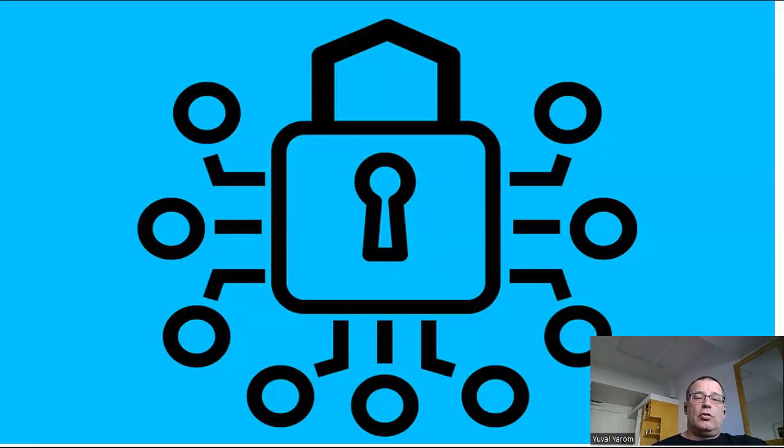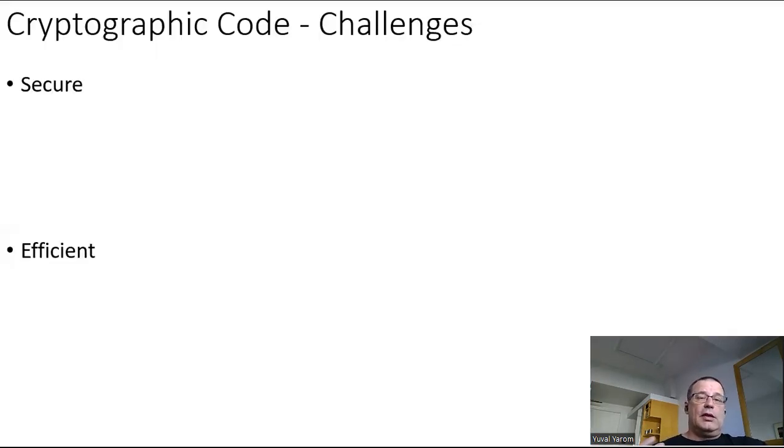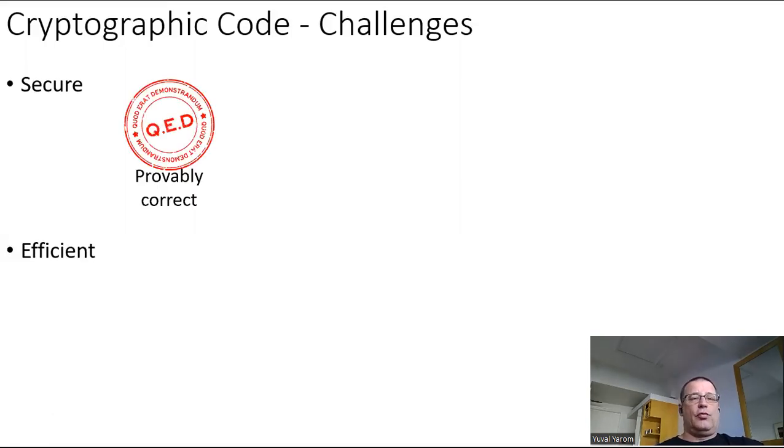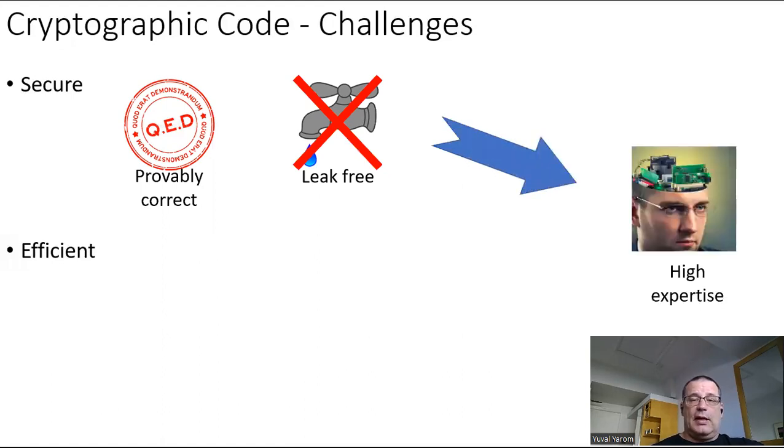Now cryptographic code needs to fulfill two main requirements. It has to be secure, and it has to be efficient. Secure because if it is not, then it does not fulfill its purpose, and efficient because otherwise it will be too costly to maintain to encrypt everything. So what does it mean to be secure? For example, we want the code to be provably correct. So we want to be able to show that the code performs the function it is supposed to. We also want the code to be leak-free, and I'll talk about this in a few seconds more. These requirements mean that to program cryptographic code, we need to have a high level of expertise.